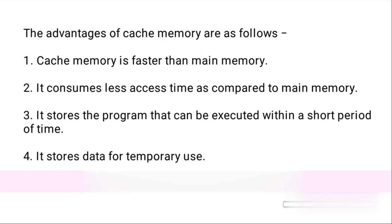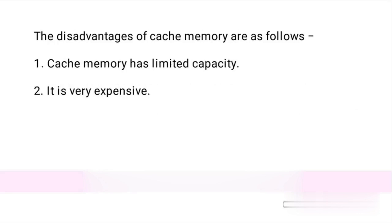The advantages of cache memory are as follows. Cache memory is faster than main memory. It consumes less access time as compared to main memory. It stores the program that can be executed within a short period of time, and it stores data for temporary use.